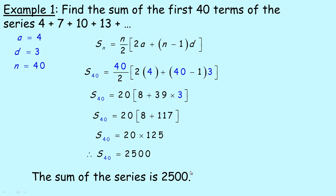The sum of the first 40 terms of the series is 2,500.